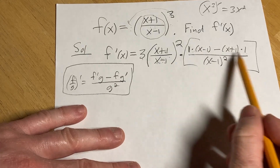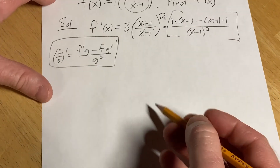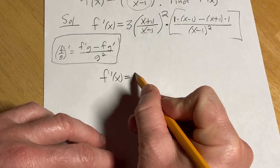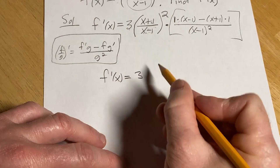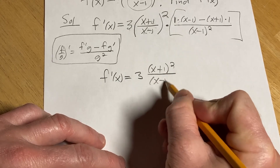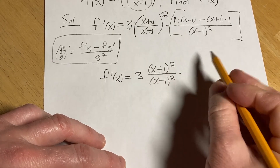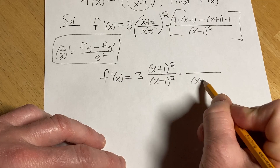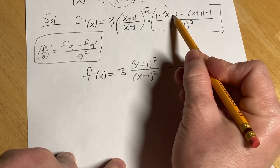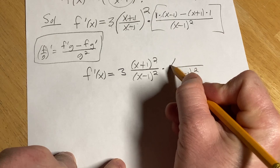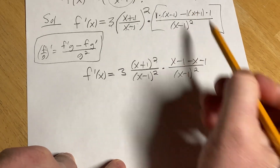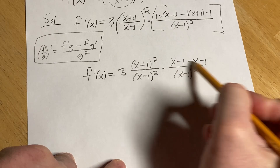We can clean this up a little bit. So we have f prime of x, we have 3. We have x plus 1 squared over x minus 1 squared, times, and then on the bottom we have x minus 1 squared. We have x minus 1 minus x minus 1 — distributing the minus 1 there and distributing the 1 here. All looks good.